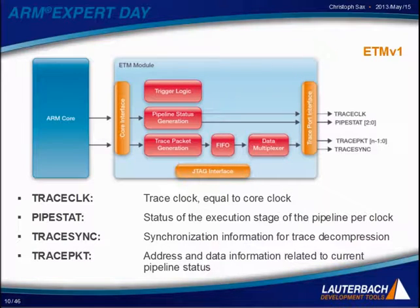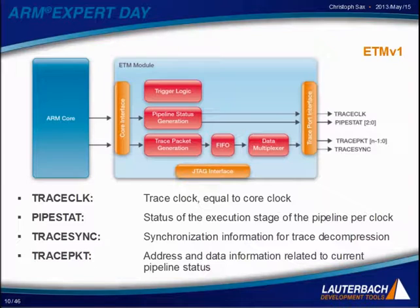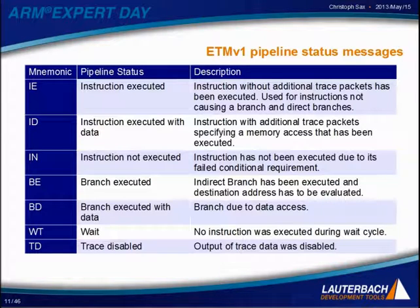Let's have a closer look at the ETM v1. Here is the basic structure. On the left we have the core and we have the output data from the core. The ETM module produces the trace information from this data. The trace information is provided by four signals: the clock signal, status flags of the execution stage of the core pipeline, a synchronization signal, and a signal that transmits address and data information relevant to the trace data.